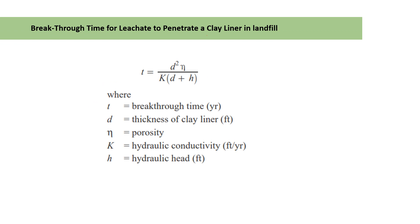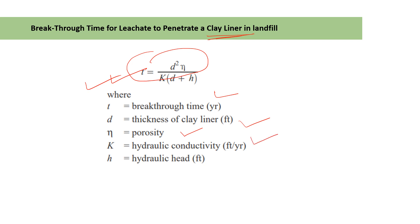The breakthrough time for leachate to penetrate the clay liner in landfill sites is calculated using: T = (η × D²) divided by (K × (D + H)), where T is the breakthrough time, D is the thickness of the clay liner, η (eta) is the porosity, K is the hydraulic conductivity, and H is the hydraulic head. These are the input values for calculating breakthrough time for leachate to penetrate the clay liner.